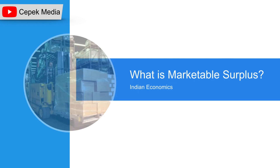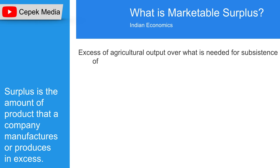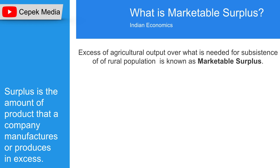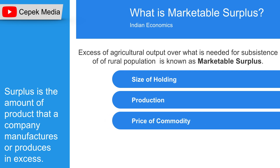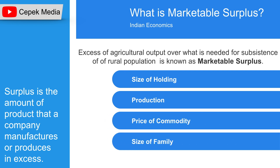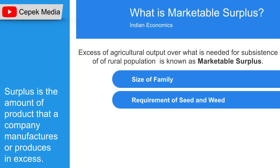In this slide we are going to learn about marketable surplus. The excess of agricultural output over what is needed for subsistence of the rural population is known as marketable surplus. Enhanced productivity and production in agriculture is vital for development. Factors affecting marketable surplus include size of holding, production, price of commodity, size of family, requirement of seed and feed, nature of commodity, and consumption habits.